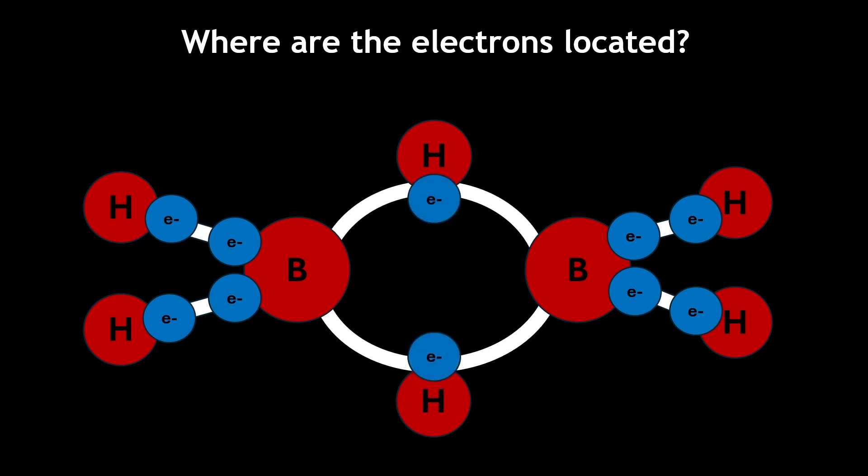The bridge hydrogen atoms contribute one electron to each 3c-2e bond, while each boron will contribute half of an electron to each 3c-2e bond.